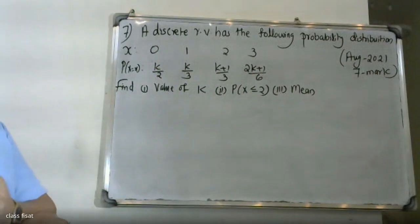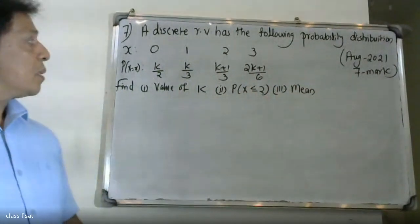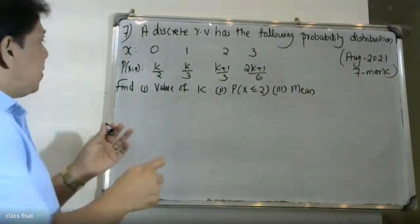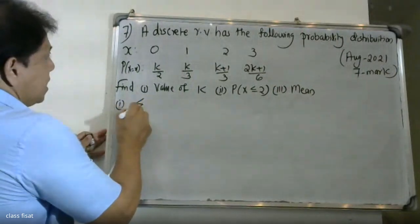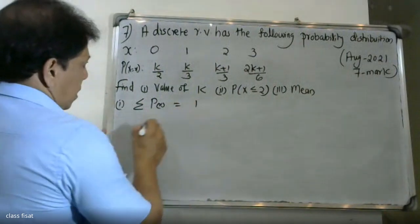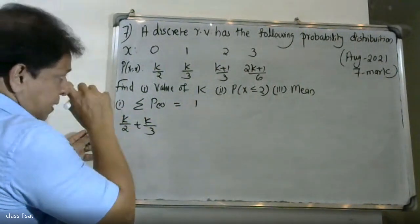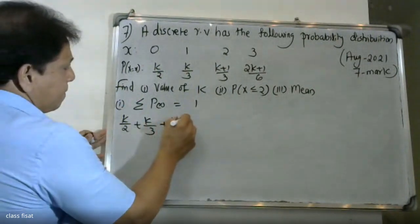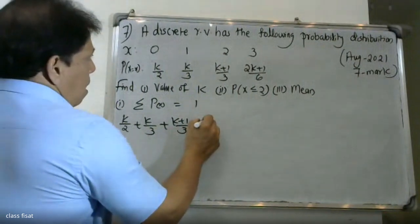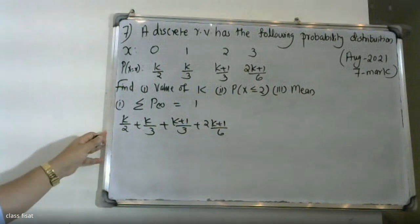We can take x equal to 1. So, the probability of x less than or equal to 1: k/2 plus k/3 plus (k+1)/3 plus (2k+1)/6.